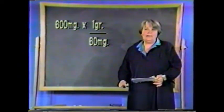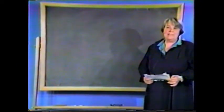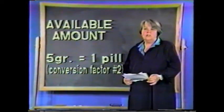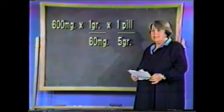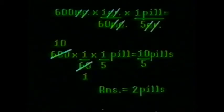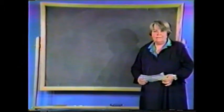But we're still not there — we don't want grains, we want pills. So we go to what's available: pills that are five grains each. Now we multiply: 600 milligrams times one grain over 60 milligrams times one pill over five grains. We cross-cancel the milligrams and the grains, then reduce, giving us 10 pills over 5, which is two pills. It's easier than you thought!